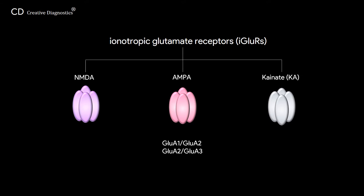NMDA receptors are heterotetramers which contain two GLU-N1 subunits and two GLU-N2A or GLU-N2B subunits. The switch between GLU-N2A and GLU-N2B subunits plays a crucial role in modulating receptor function.